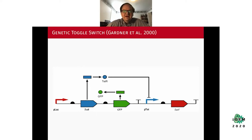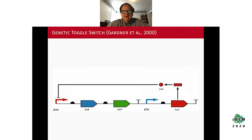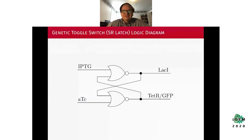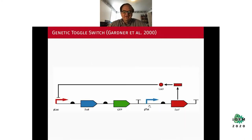You can flip the switch again to turn it off by adding another small molecule, aTc, which binds to TetR and prevents the repression of pTet, allowing you to go back to the off state. What I'd now like to do is demonstrate how we can build a genetic design for this toggle switch — and for electrical engineers in the room, what you should have recognized is this cross-coupled NOR gate, known as the set-reset latch.